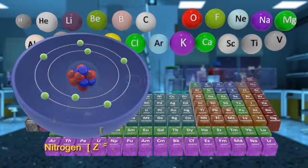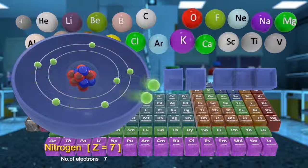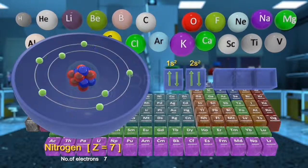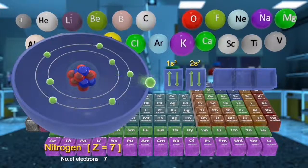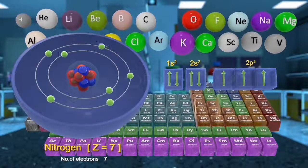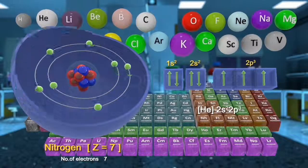Nitrogen has seven electrons. The first four electrons fill the one s- and two s-orbitals. The remaining three electrons will go to the three two p-orbitals, in accordance with Hund's rule, and these will have parallel spin.